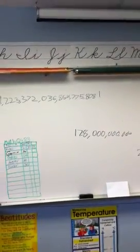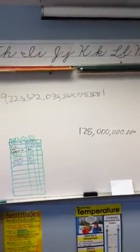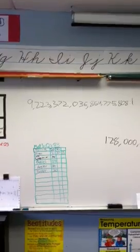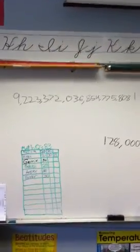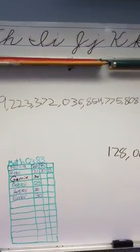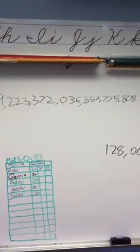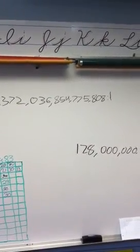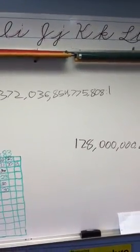Sawyer, how do you say that number? The only problem is I don't know what comes after quadrillion. Quintillion! Okay: nine quintillion, 223 quadrillion, 372 trillion, 36 billion, 854 million, 775,808.